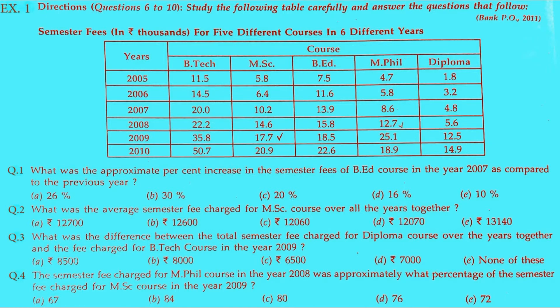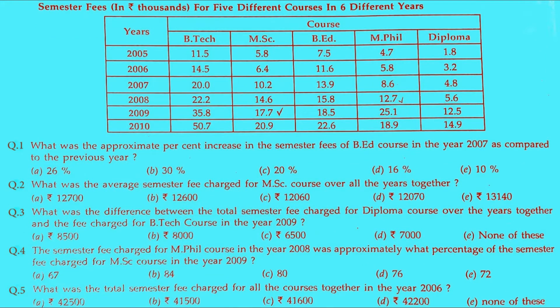Question 6 asks: what was the approximate percent increase in the semester fees of the BAD course in the year 2007 as compared to the previous year? Five options are given — note that in bank PO exams there are usually five options, unlike SSC which has four. Please pause this video first and try to do it yourself. This question came in Bank PO 2011, so it is very important.